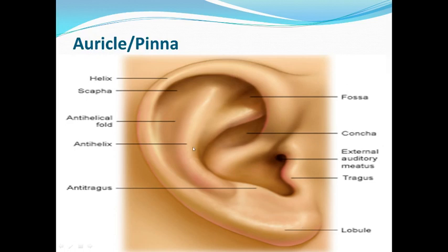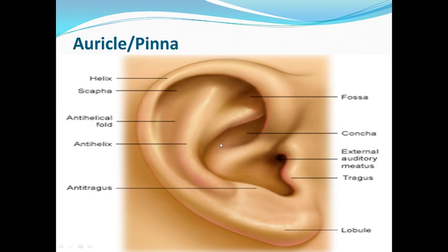Talking about other parts of the pinna: as you can see in this figure, the most prominent outward border is called the helix. The depression or concavity just below the helix is called the scapha. The most important part to note is the concha — the large depression on the pinna — which is responsible for accumulating and directing sound waves towards the external auditory meatus.